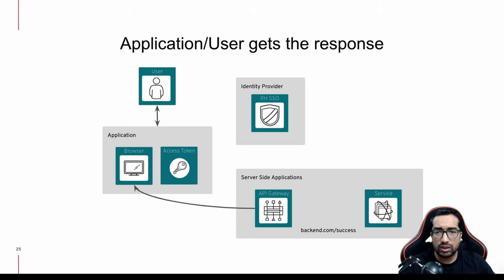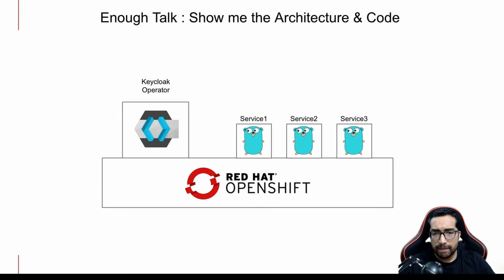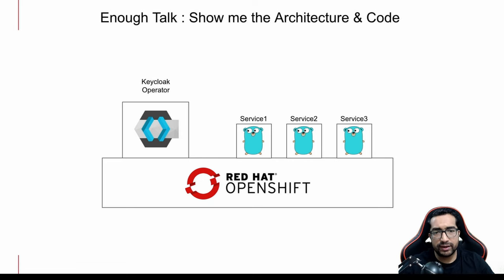There could be other flows as well, but just to keep things simple, that's how a standard bearer-token-based workflow looks for a microservices application. Now let's do some actual hands-on. In this demo, we're going to use OpenShift, which is an enterprise distribution of Kubernetes from Red Hat. We'll install the KeyCloak operator, then deploy three microservices that will talk to KeyCloak to get authentication and authorization done.